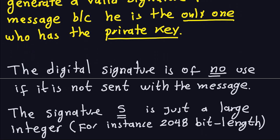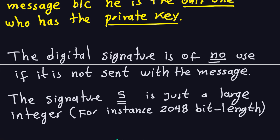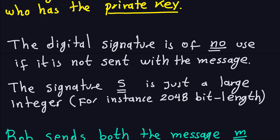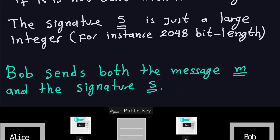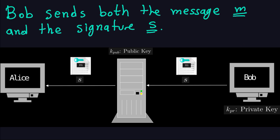The digital signature is of no use if it is not sent with the message — the signature is really attached to the message and cannot exist without it. Unlike signatures in real life, which can exist by themselves, digital signatures can only exist if they are paired with the message. The signature is usually a large number — for instance, it could be a 2048-bit length number. The signature algorithm has two inputs, the private key and the message. Bob is going to send both the message and the signature. In reality, he's not going to send the actual message directly — he's going to first encrypt it and then send it together with the signature through the insecure channel.